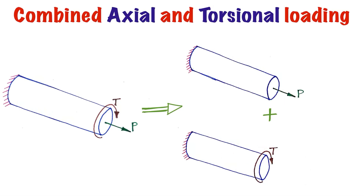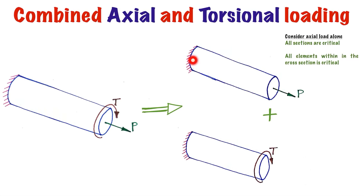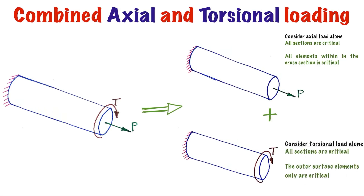For these individual cases you already know how to locate the critical cross section and critical elements from the last video. When considering axial load alone, all cross sections are critical and all elements within the cross section are critical. When twisting moment is acting alone, all sections are critical but only the outer surface elements are critical. In order to determine the critical cross section for combined loading, you take what is common: all sections are critical in both cases, so for combined loading also all sections will be critical.